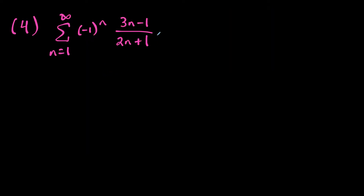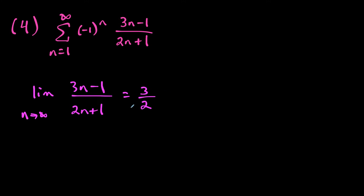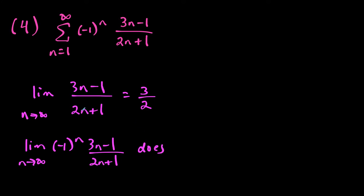For question four, I take the limit as n goes to infinity of b sub n, which is three n minus one over two n plus one. This limit equals three halves, which is not equal to zero. So we switch to the nth term test: the limit as n goes to infinity of negative one to the n times three n minus one over two n plus one does not exist, because it bounces between plus and minus three halves. By the nth term test for divergence, the series diverges.